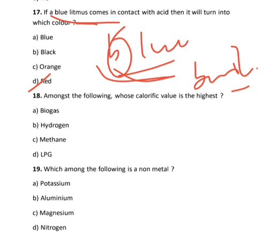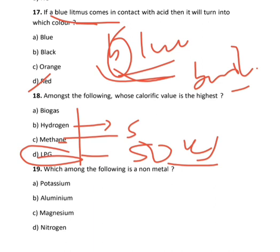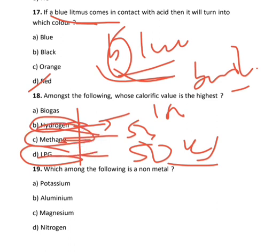Amongst the following, which calorific value is the highest? The calorific value of hydrogen is highest at about 150 kilojoules. In methane and LPG it's about 50-55 kilojoules. So if hydrogen is an option, choose it. If not, then methane. If methane is not there, then LPG. Hydrogen has more than three times the calorific value of LPG.